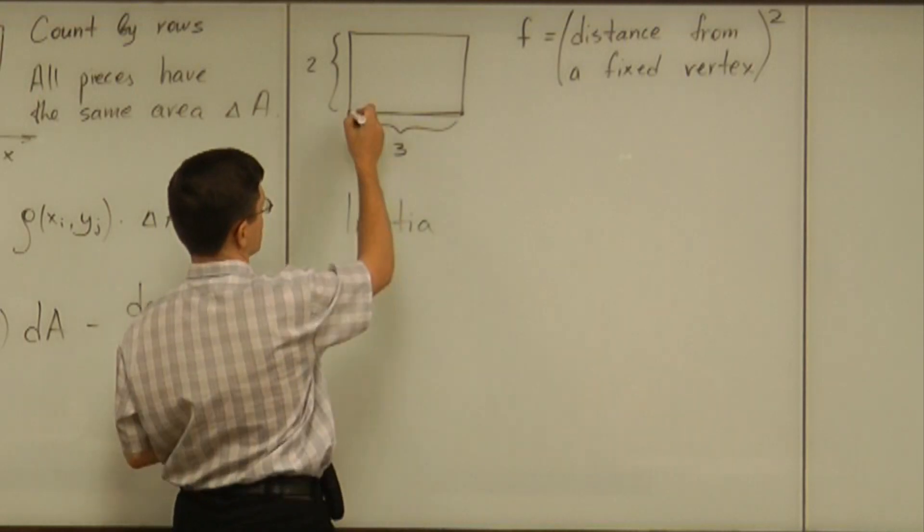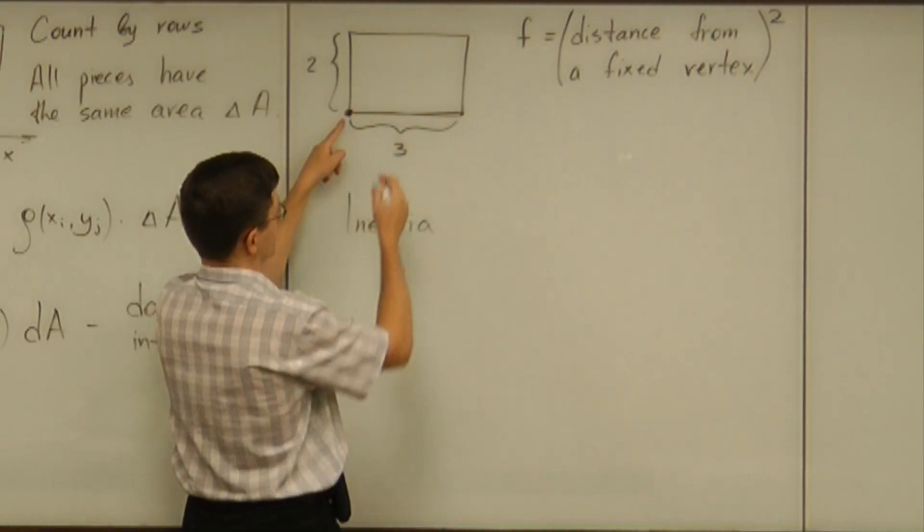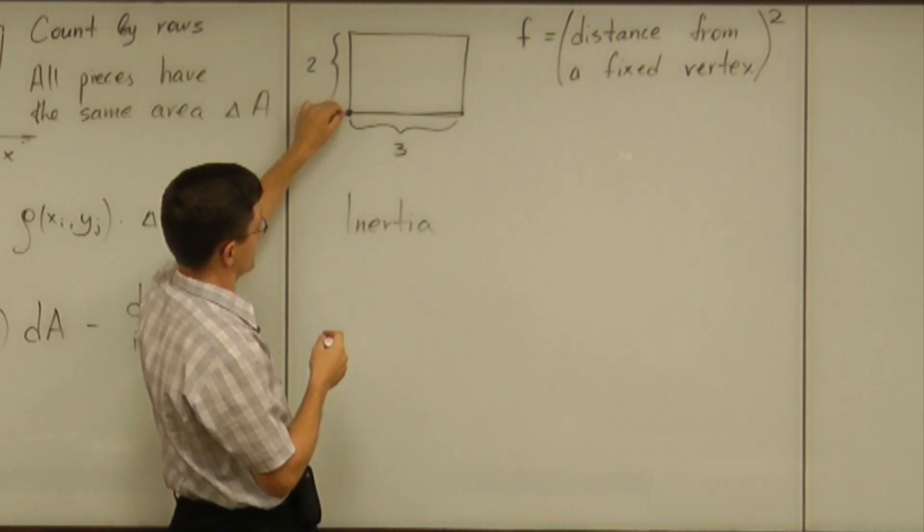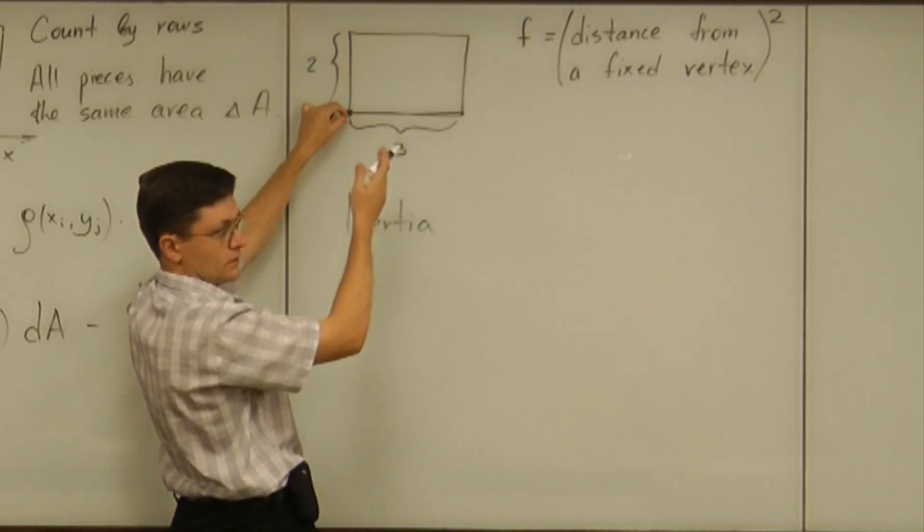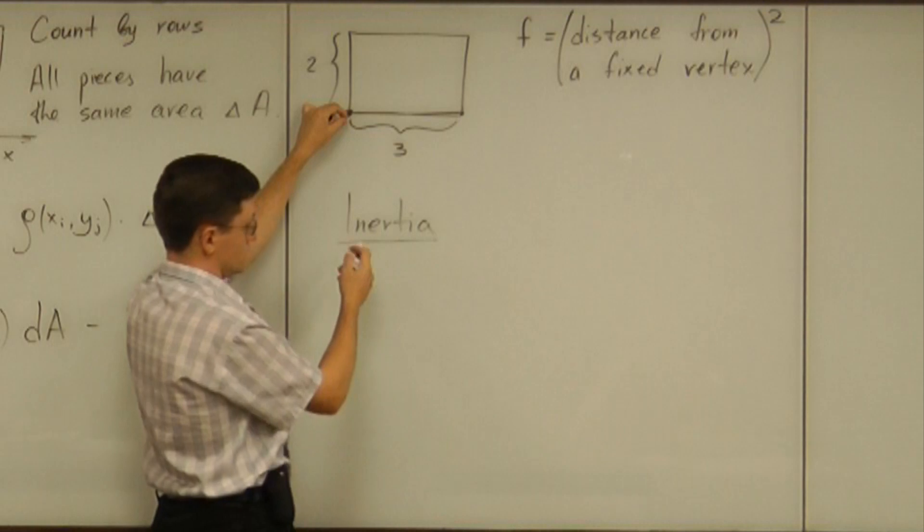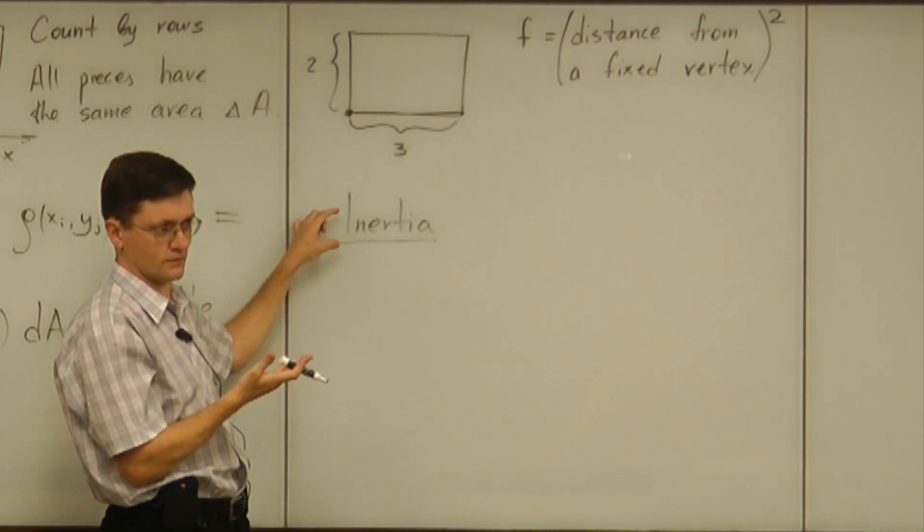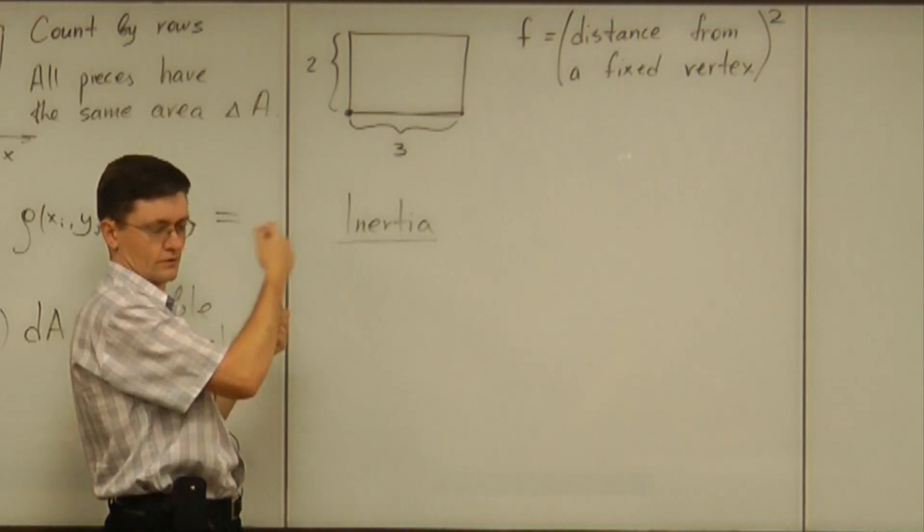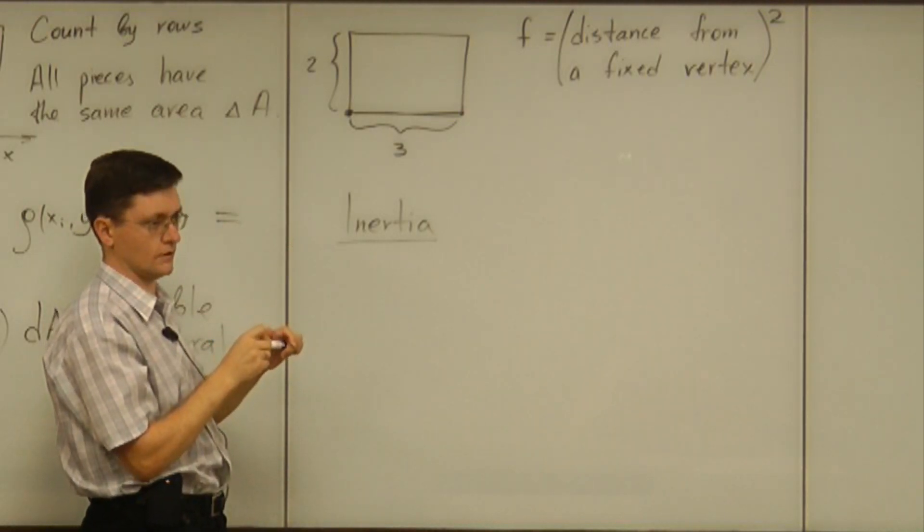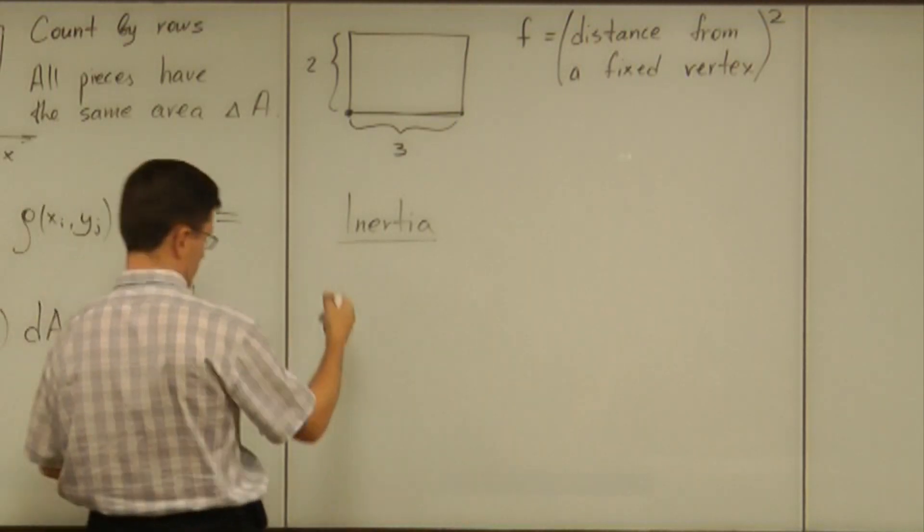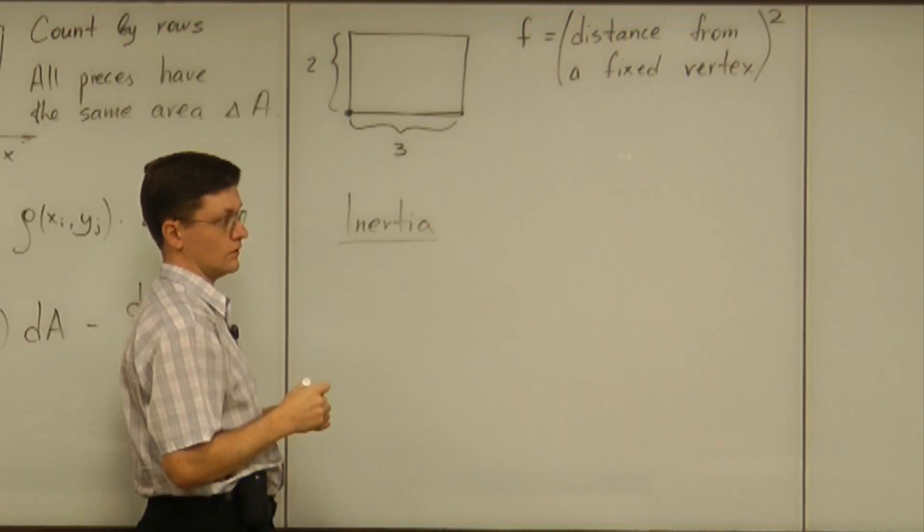What you may want to consider is rotation of the whole plate around this corner. If someone wants to grab that corner and rotate the whole thing, one would like to compute that inertia that essentially plays the role of mass with respect to that specific motion.